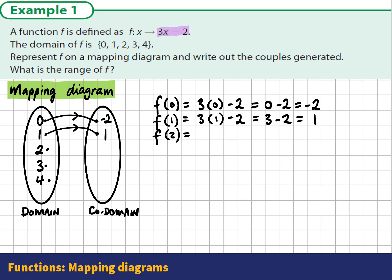When we input 2, we get 3 times 2 minus 2, which is 6 minus 2, which is 4. So we show that 2 is mapped onto 4.